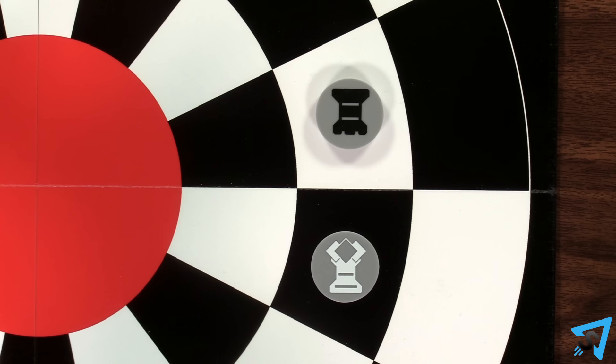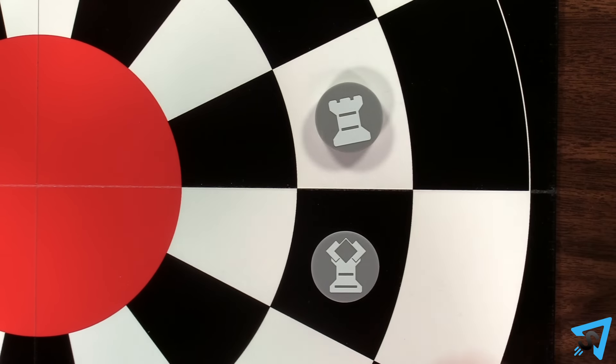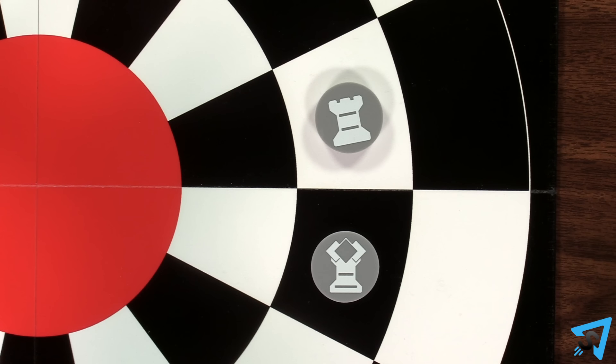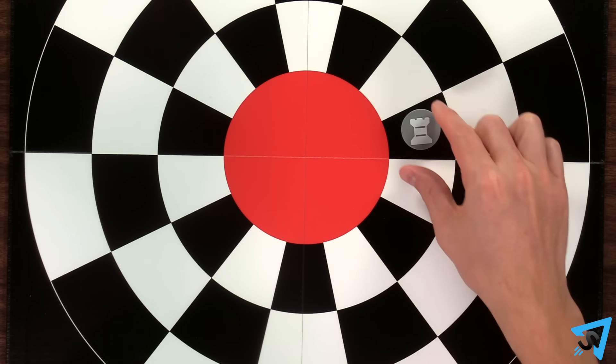The diplomat may not capture pieces, but instead may suborn them. Instead of moving, the diplomat can suborn an adjacent enemy piece to your side. Simply leave the diplomat stationary and replace your opponent's piece with the same piece of your color. You now control that piece and all its abilities, and may move it as soon as your next turn.